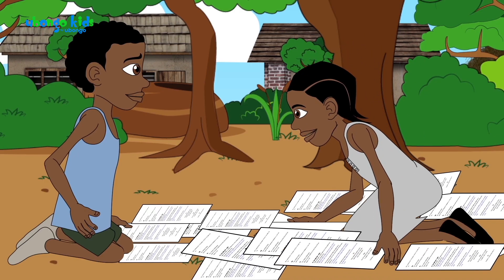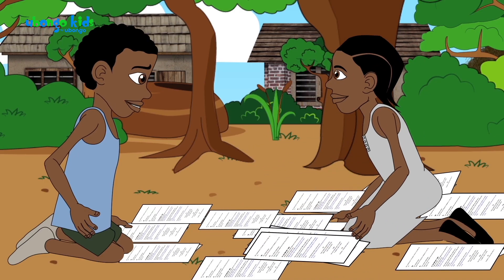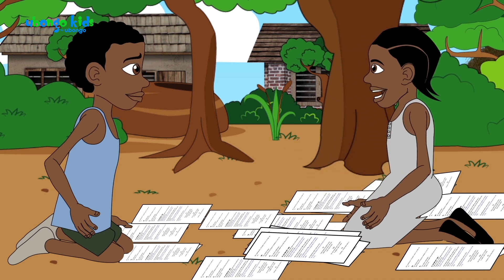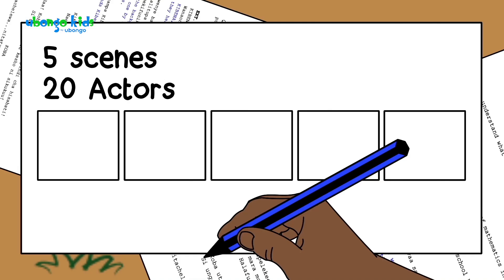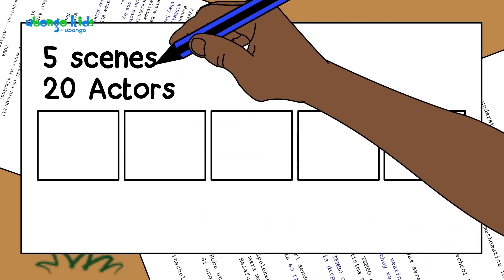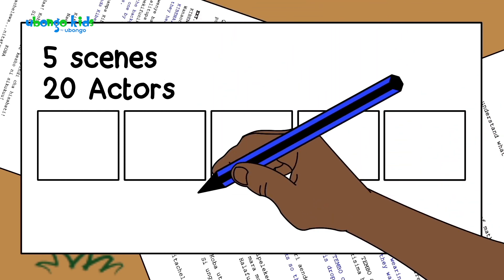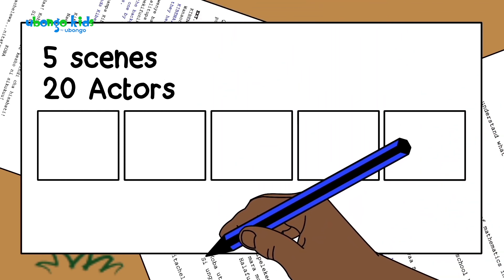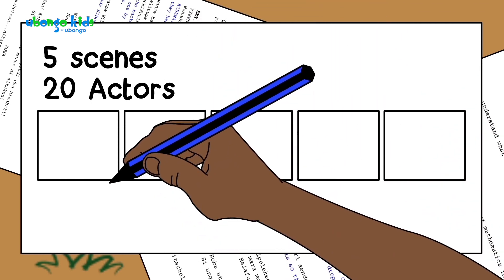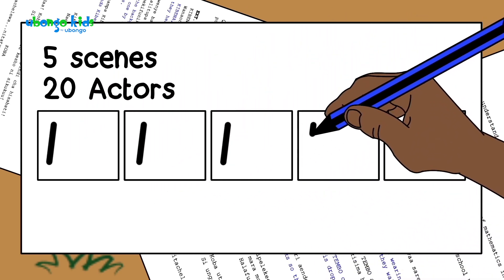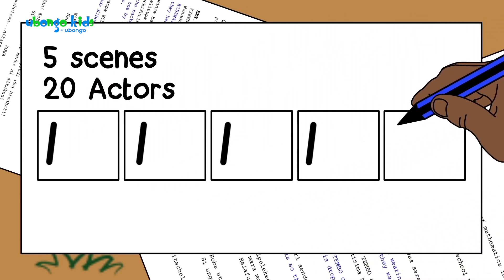How many scenes do you need to shoot? Only five. We can do it, Koba. We just need to use our brains. You have 20 actors and five scenes to shoot, right? Let's put them in the scenes then — one person in the first scene, two, three, four, five.